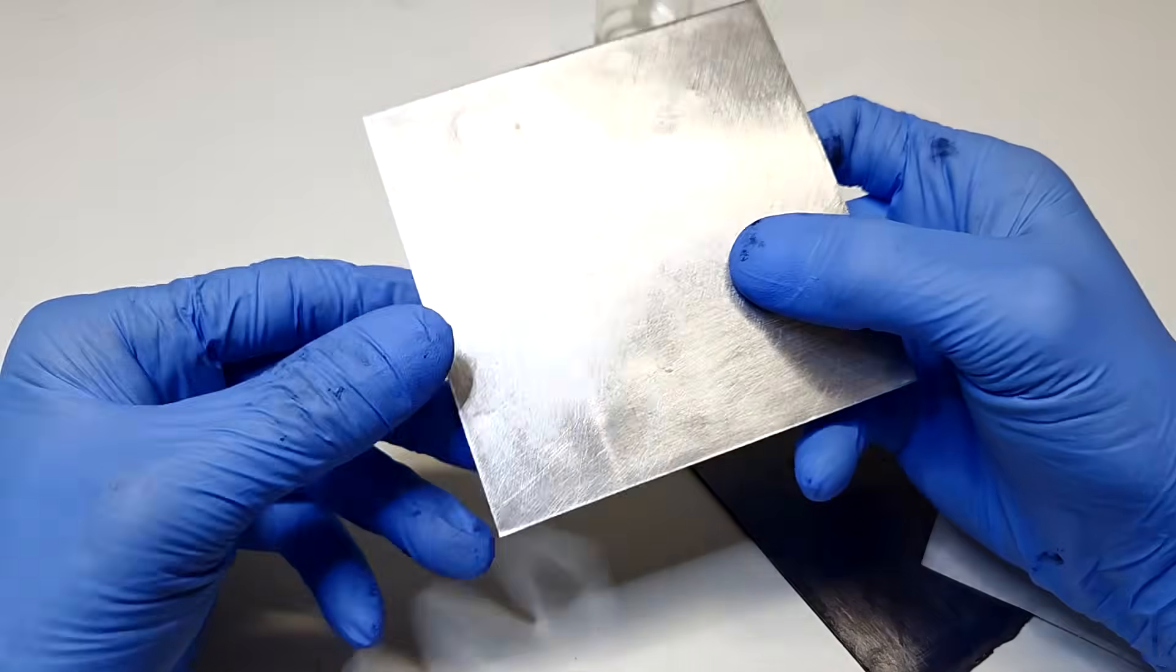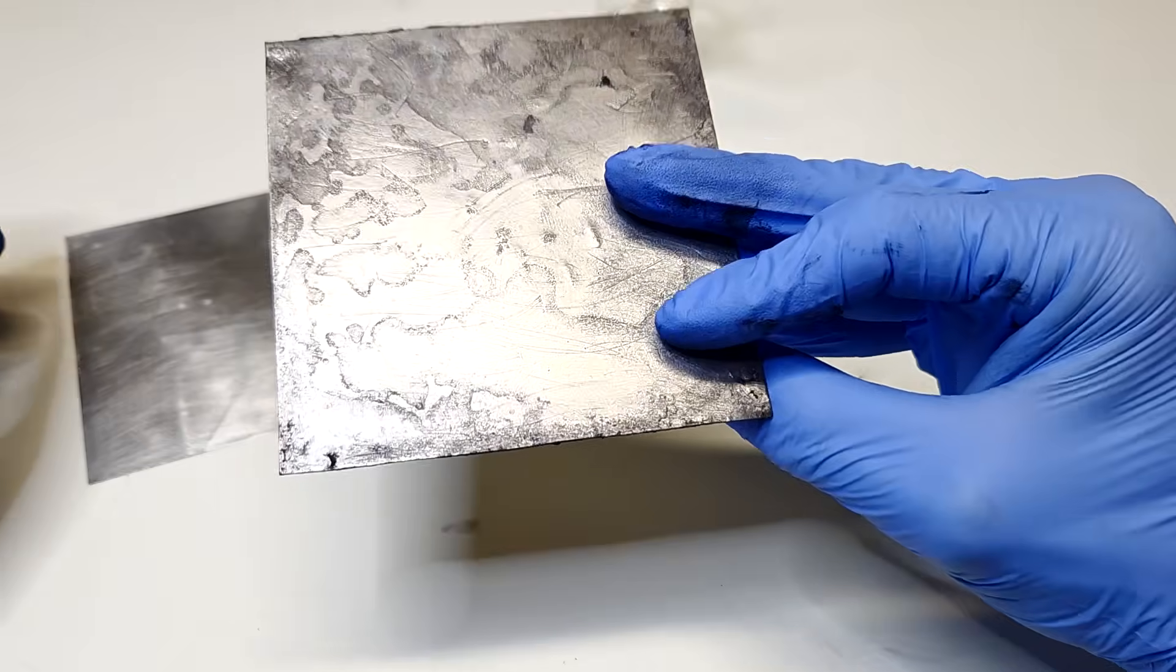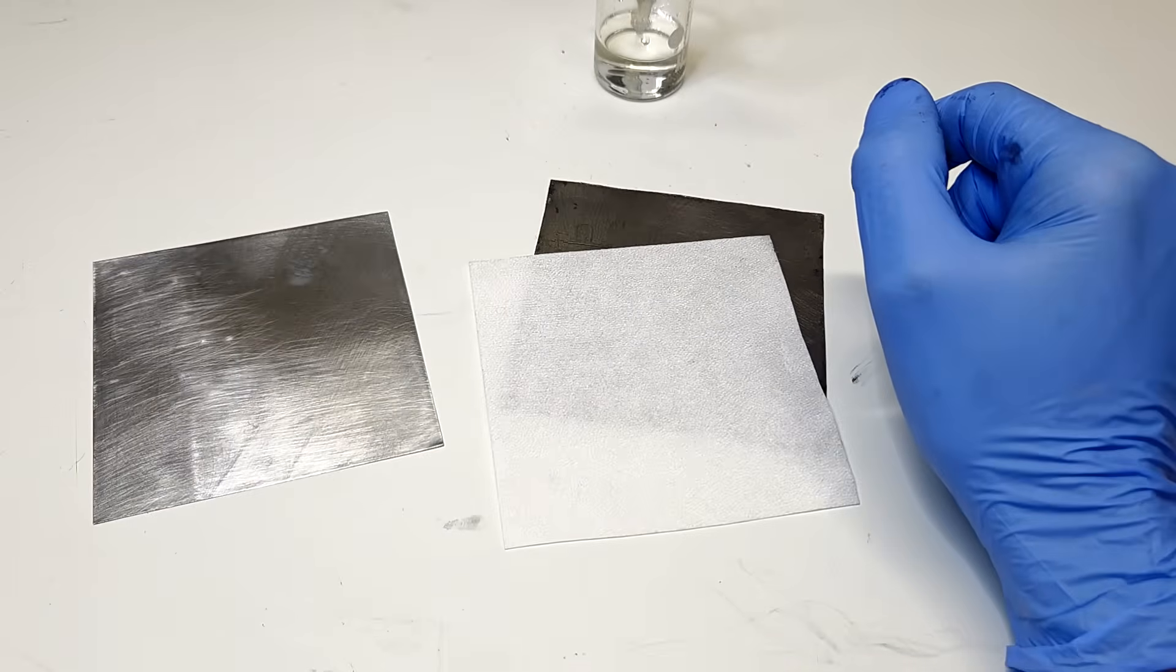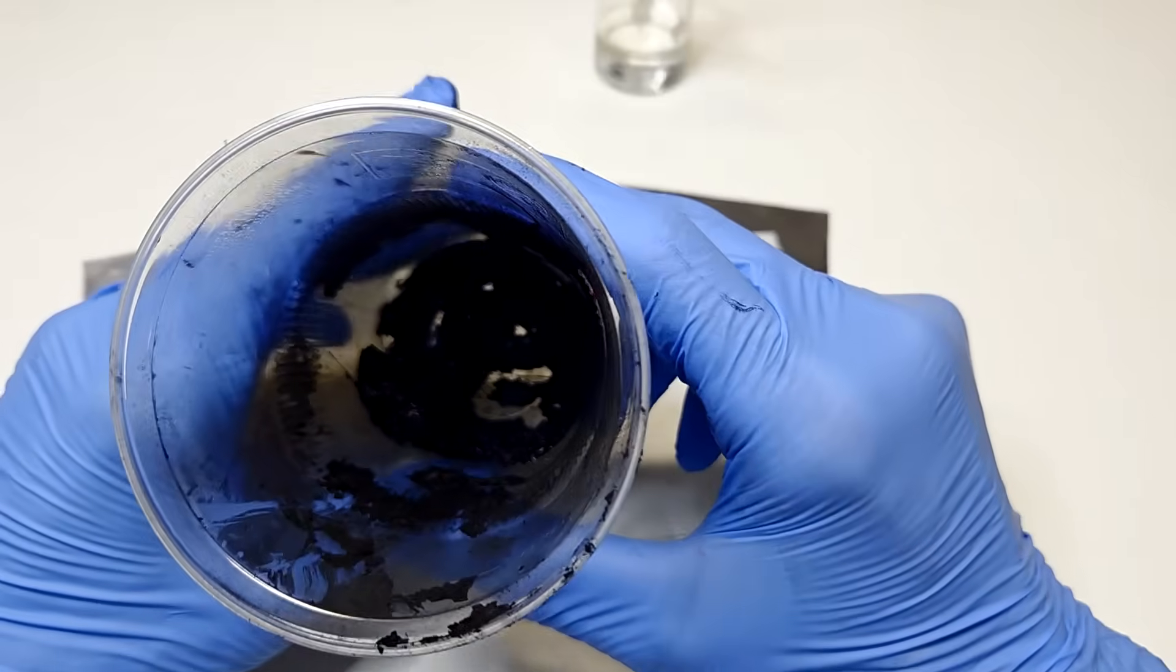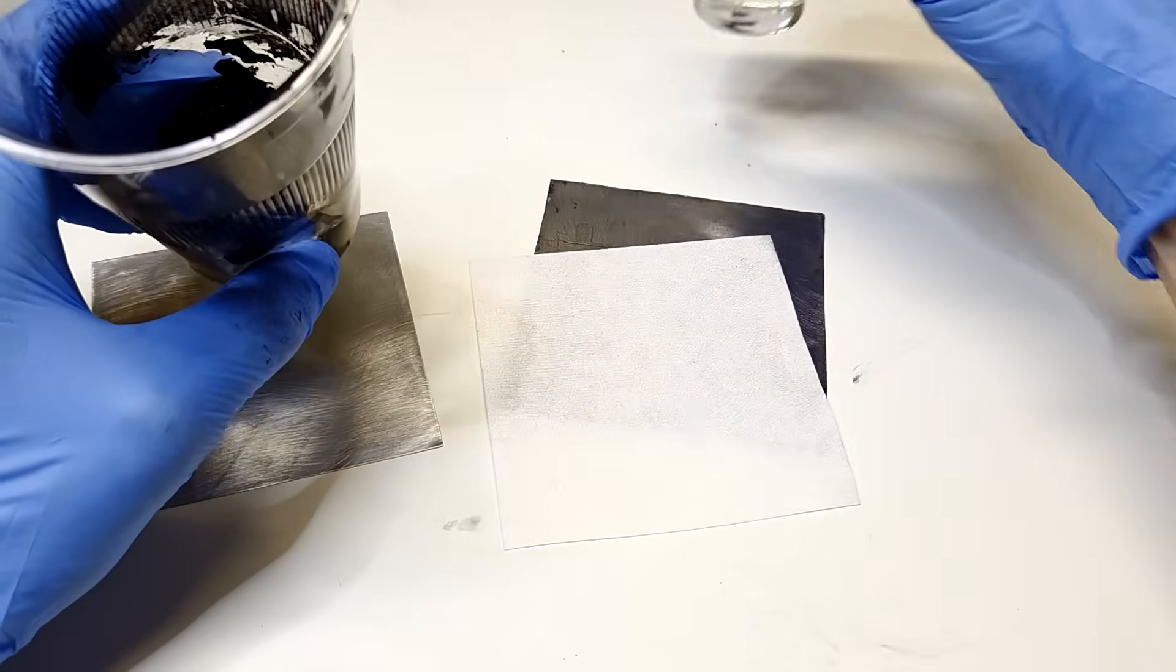So again here I have some zinc, some graphite, and some separator. And here I have also this activated carbon powder which was mixed with the table salt electrolyte.